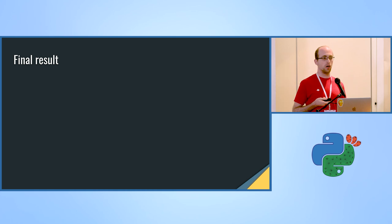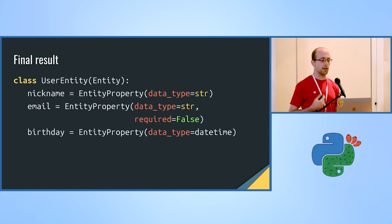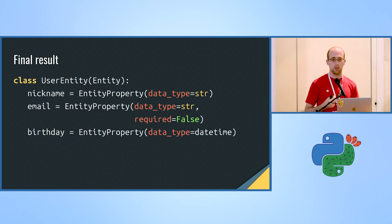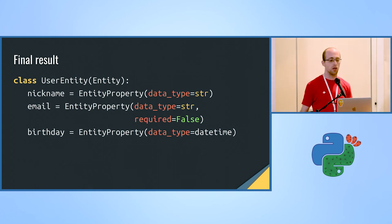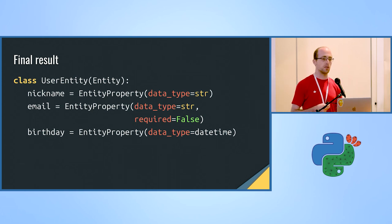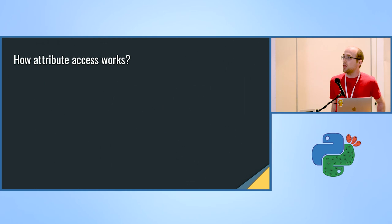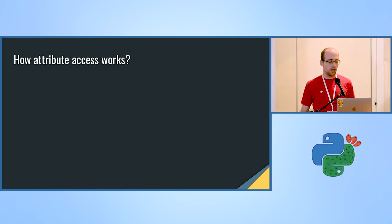The final result we're aiming for is to define a class where all schema members are already defined as members of the class namespace at the root — not as part of the __init__ method. Furthermore, we want to add annotations to each field in the schema: perhaps a data type, whether it's required, or other attributes specific to your database. To do that, we first need to understand how attribute access actually works in Python.